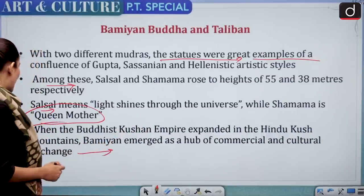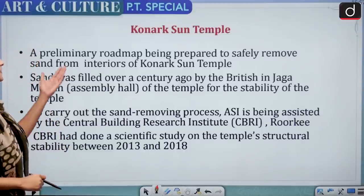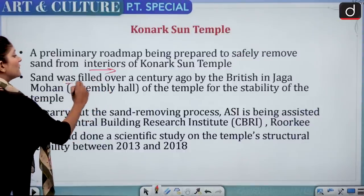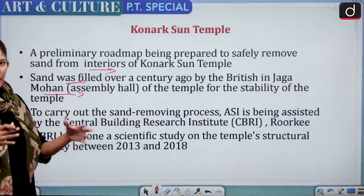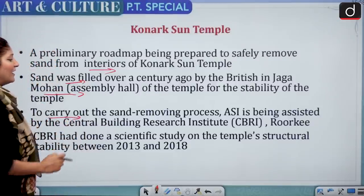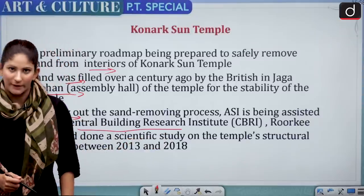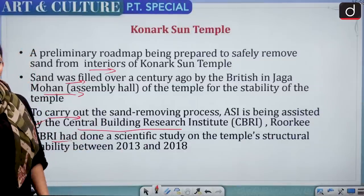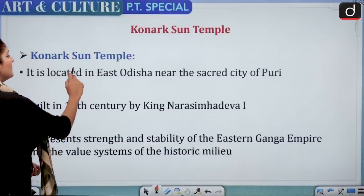Moving on to Konark Sun Temple — a preliminary road map is being prepared to safely remove sand from the interiors of the Konark Sun Temple. This sand was filled over a century ago by the British in the Jagmohan, that is the assembly hall, to create structural stability. The Archaeological Survey of India is being assisted by the Central Building Research Institute of Roorkee, which conducted a scientific study on temple structure stability between 2013 and 2018.